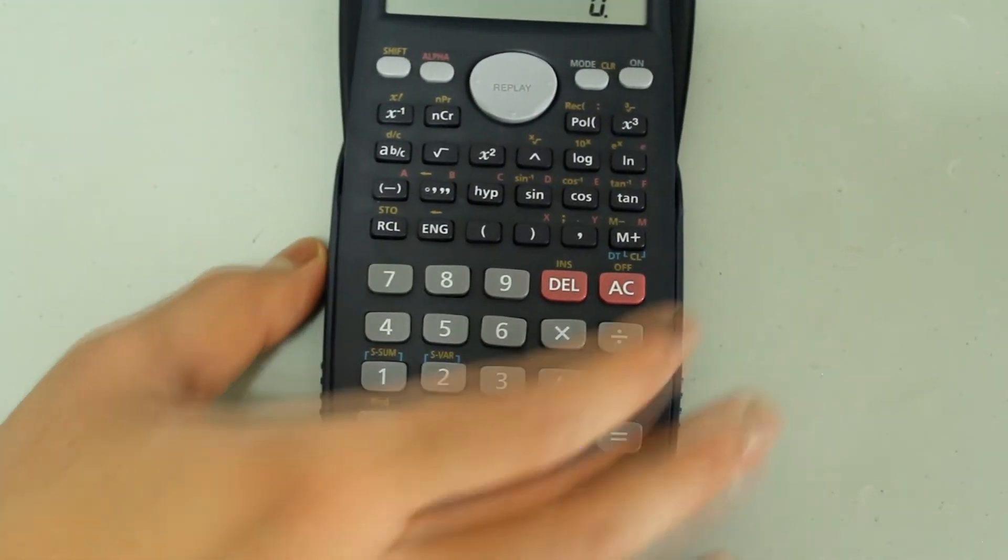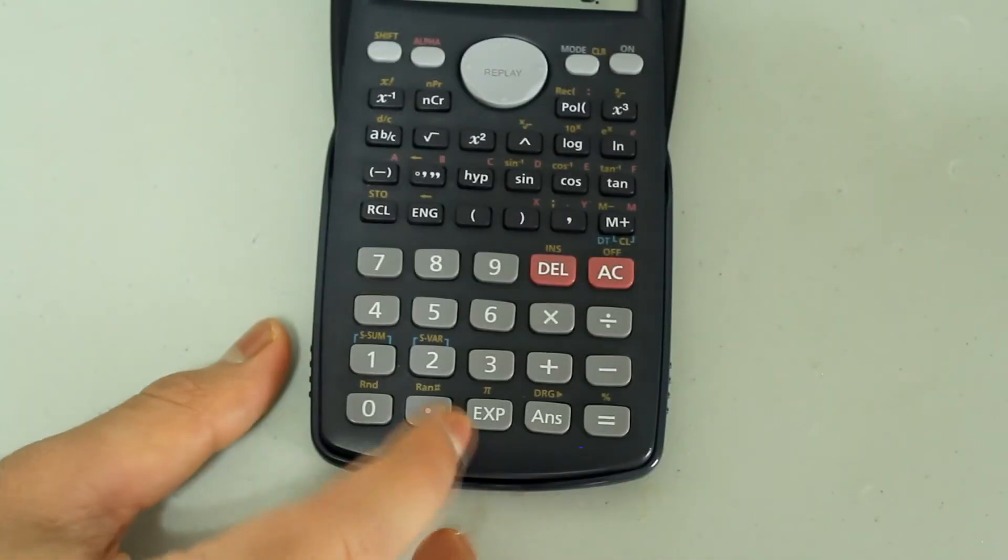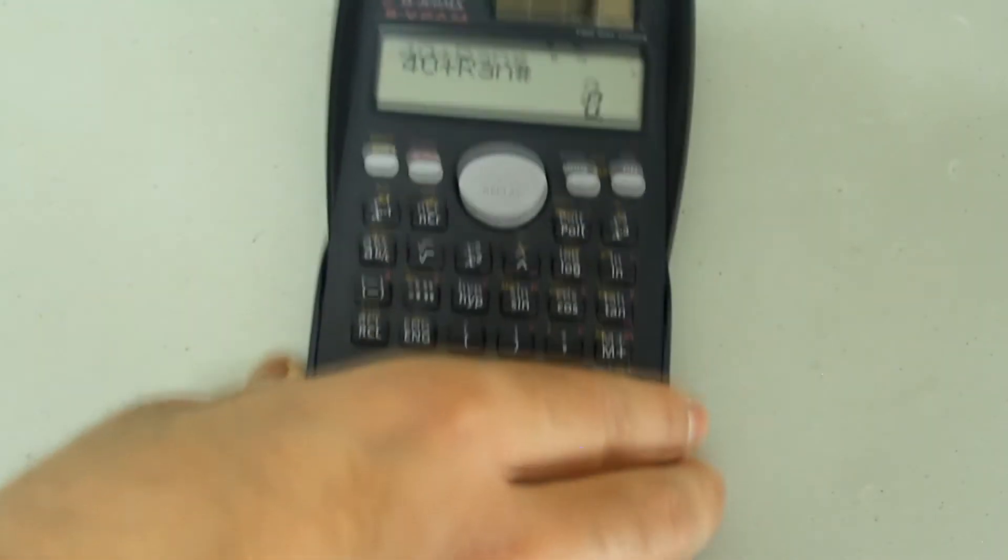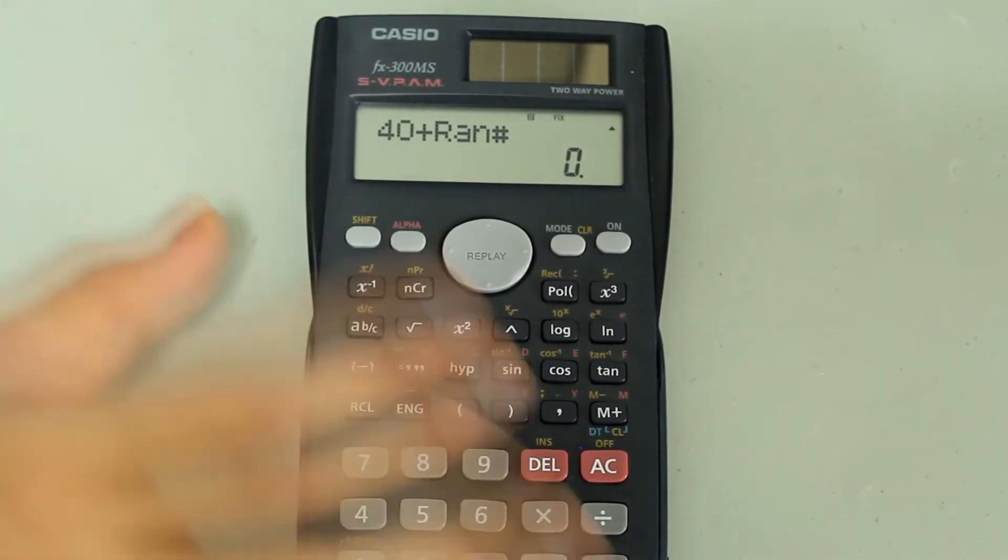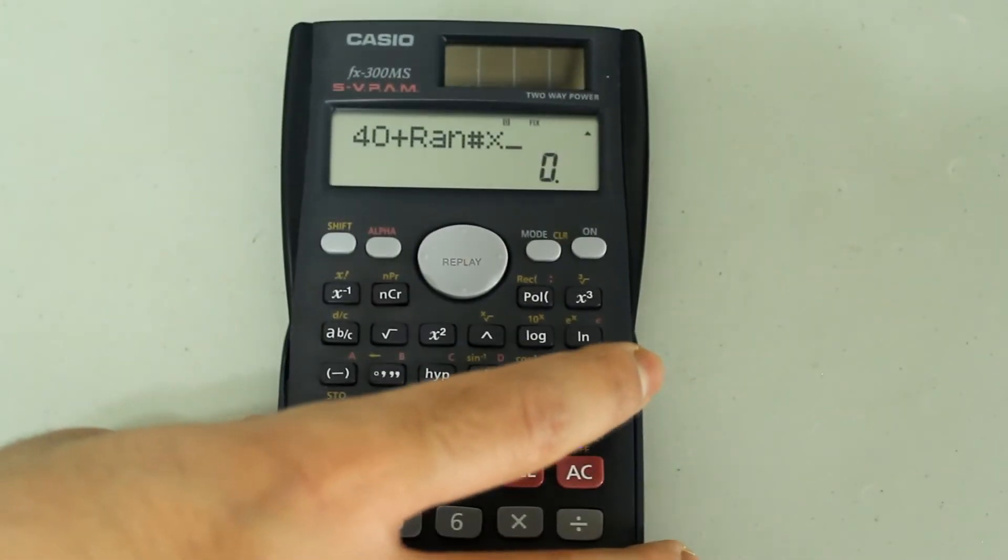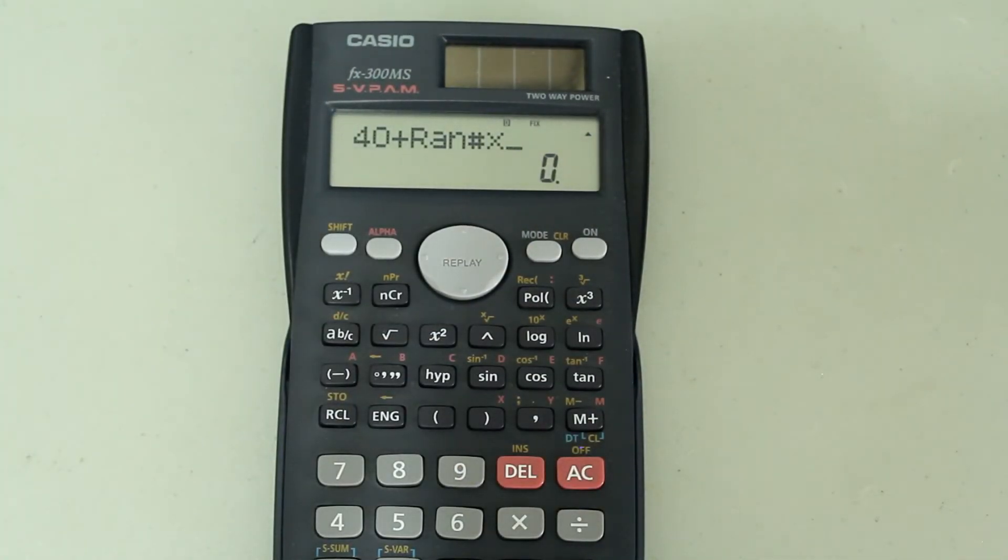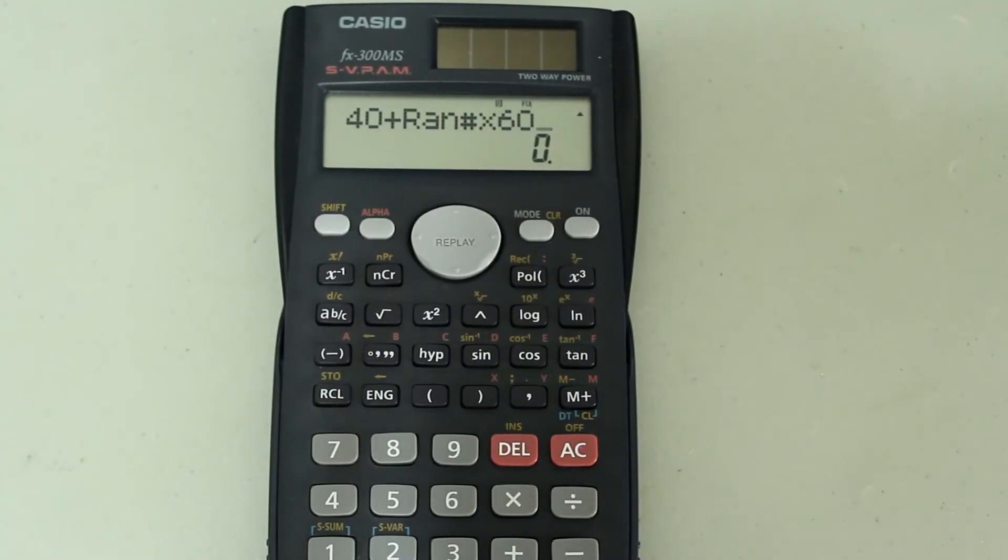Then to this, you're going to add, and then press shift and the decimal button to bring up the random number generator. You're going to multiply the random number generator by the difference between your upper value and your lower value. So 100 minus 40 gives you 60, so multiply by 60.